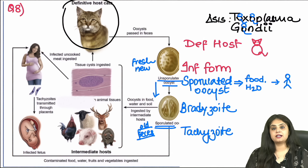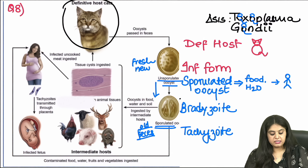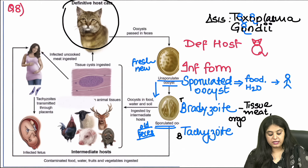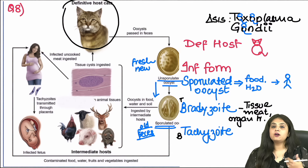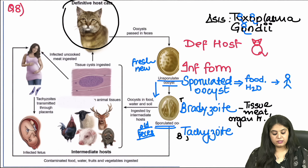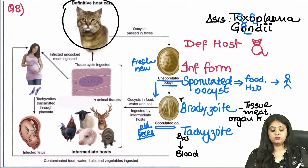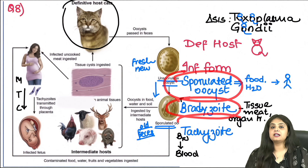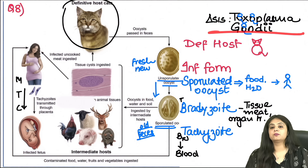The second infective route involves bradyzoites and tachyzoites, remembered by the mnemonic BTBT. B for bradyzoite — T for tissue, meaning it comes via tissue such as meat or organ transplant. T for tachyzoite — B for blood, meaning anything related to blood such as blood transfusion or mother-to-child transmission involves tachyzoites. So the three infective stages of Toxoplasma gondii are: sporulated oocyst, bradyzoite, and tachyzoite.